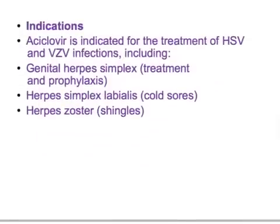Regarding the mechanism of action: acyclovir is monophosphorylated by viral thymidine kinase (TK), then further bioactivated by host cell kinase to the triphosphate form. Acyclovir triphosphate is both a substrate for and an inhibitor of viral DNA polymerase. When incorporated into the DNA molecule, it acts as a chain terminator because it lacks the ribosyl 3-prime hydroxyl group.